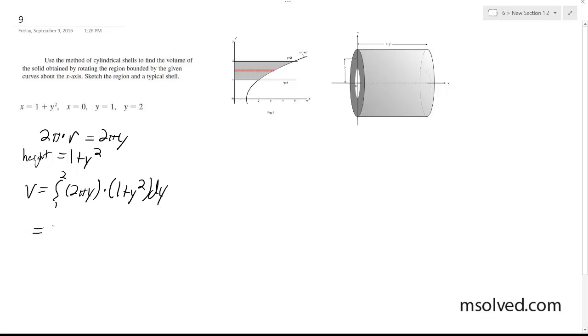Simplifying this further, we get 2 pi, 1 to 2, y plus y cubed dy.